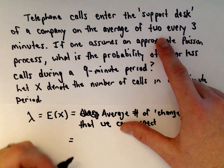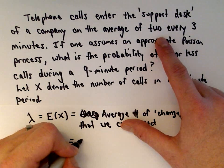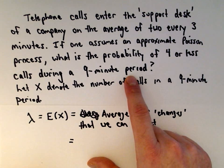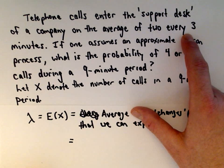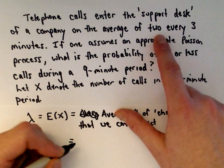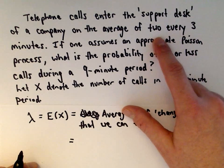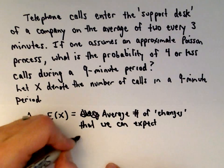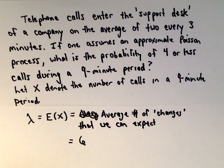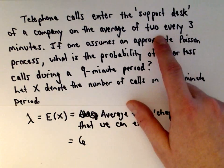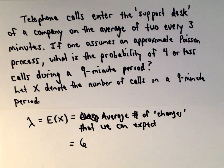We get two phone calls every three minutes, so how many would we expect during a nine-minute period? After three minutes: two calls; after six minutes: four calls; after nine minutes: six calls. So lambda equals six — over this nine-minute period we would expect six phone calls.